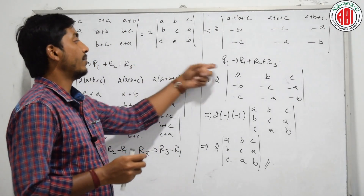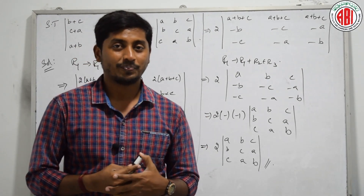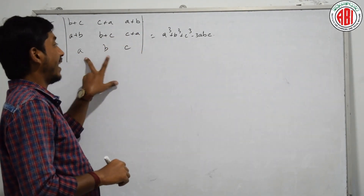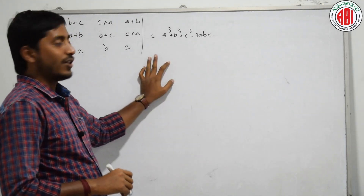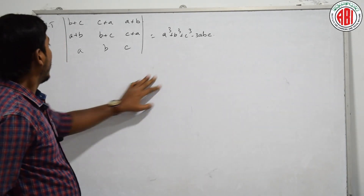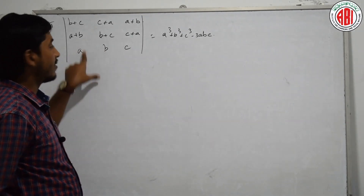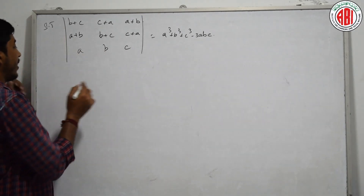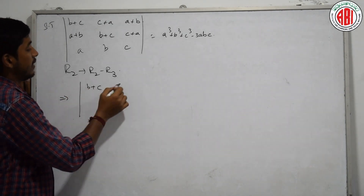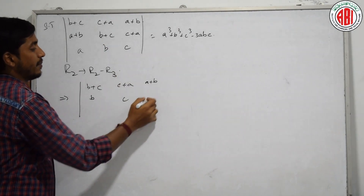The only thing you have to remember is when to use row operations — and you will get to know only when you practice the questions more and more. Next problem: B plus C, C plus A, A plus B; A plus B, B plus C, C plus A; A, B, C is equal to some value. Applying R2 tends to R2 minus R3: A plus B minus A is B; B plus C minus C is B... wait, correcting — A plus B minus A is B, B plus C minus C is B... Let me redo: R2→R2−R3 gives: row 1 B plus C, C plus A, A plus B as is; row 2 becomes A plus B minus A = B, B plus C minus B = C... actually: A plus B minus A is B; B plus C minus C is B; C plus A minus B... Let me state it cleanly: after R2→R2−R3, row 2 becomes B, C, A.